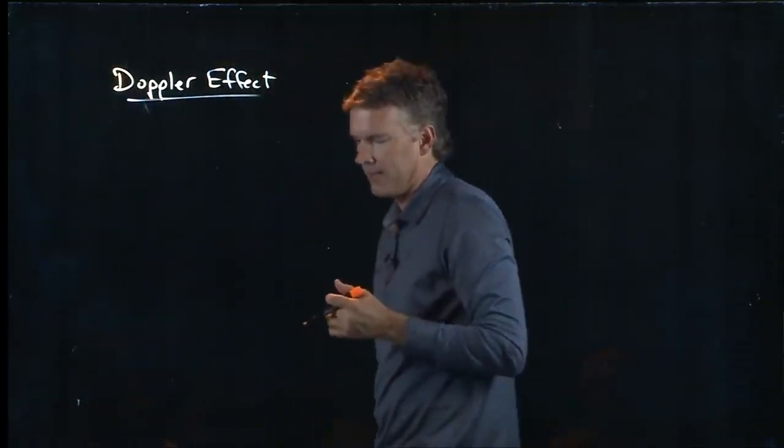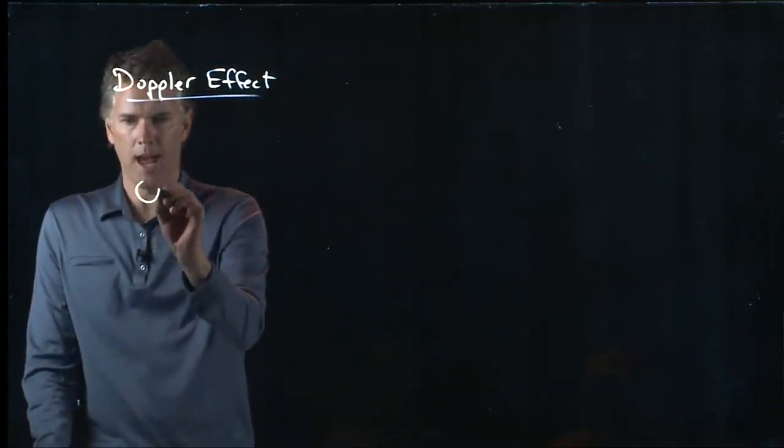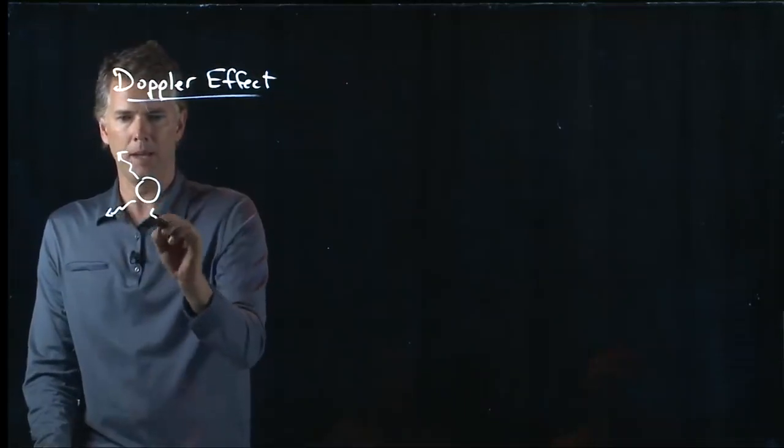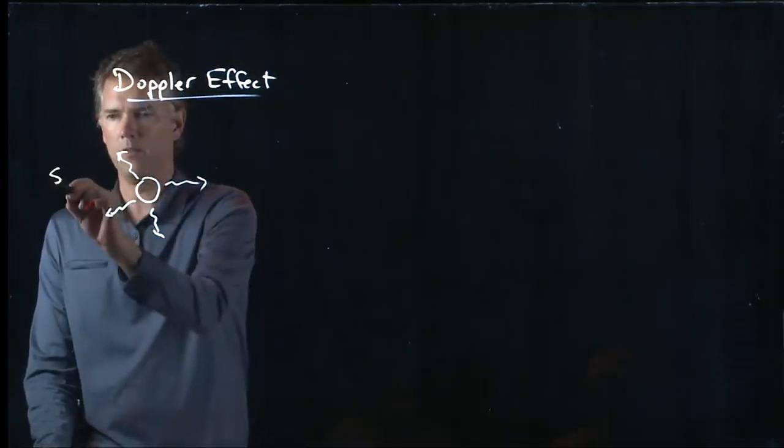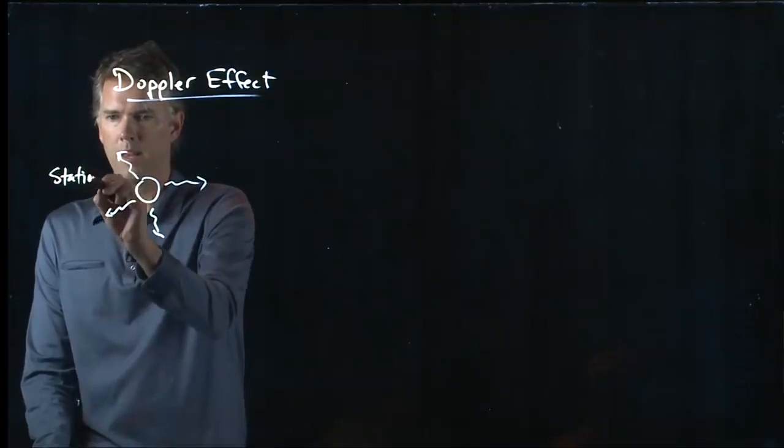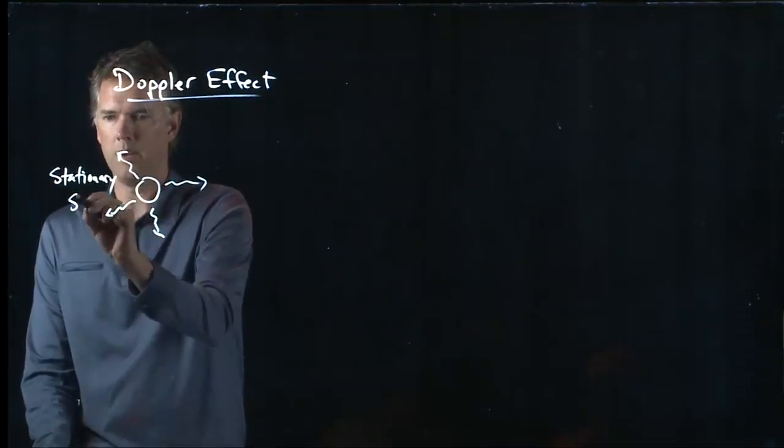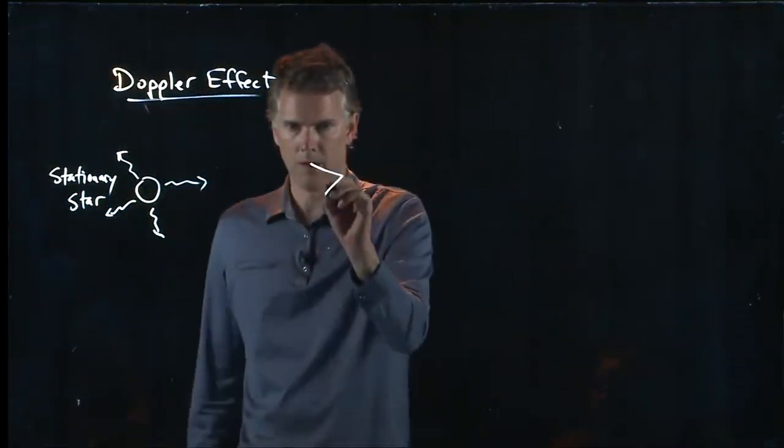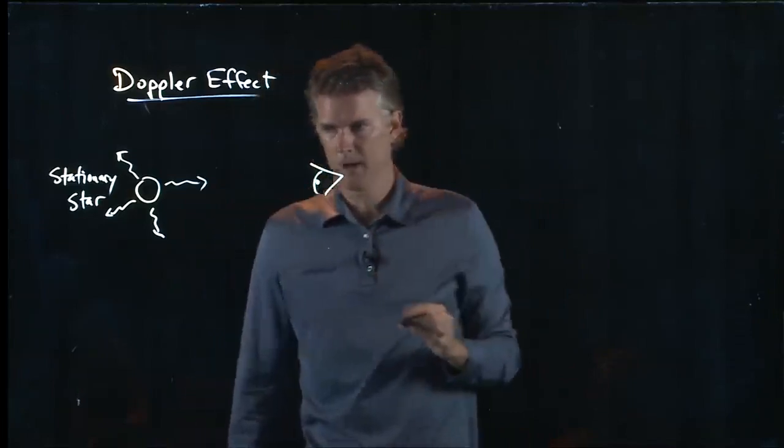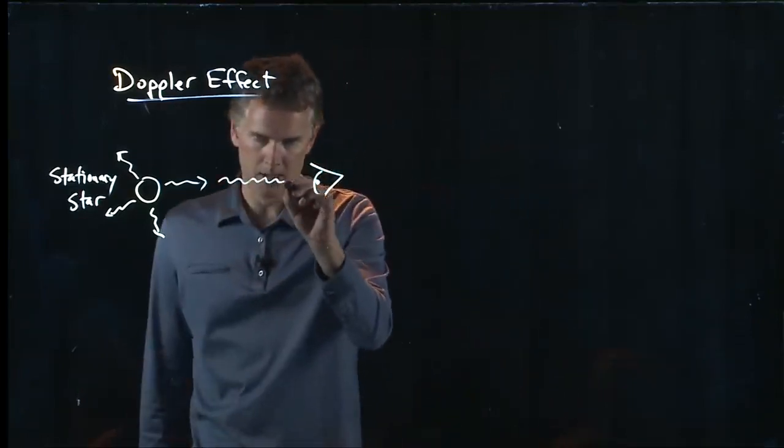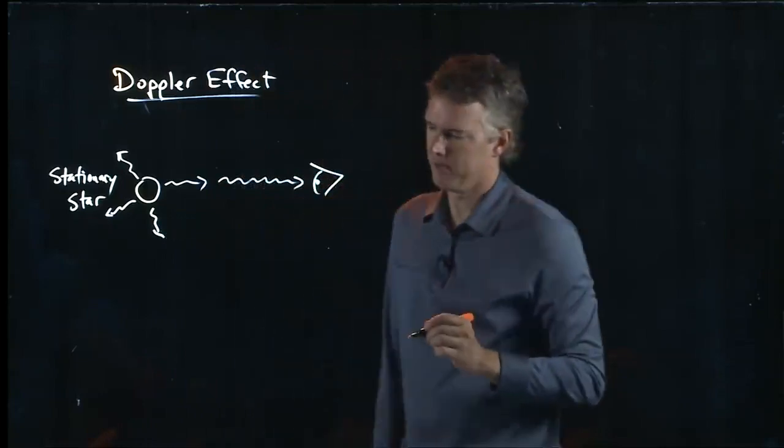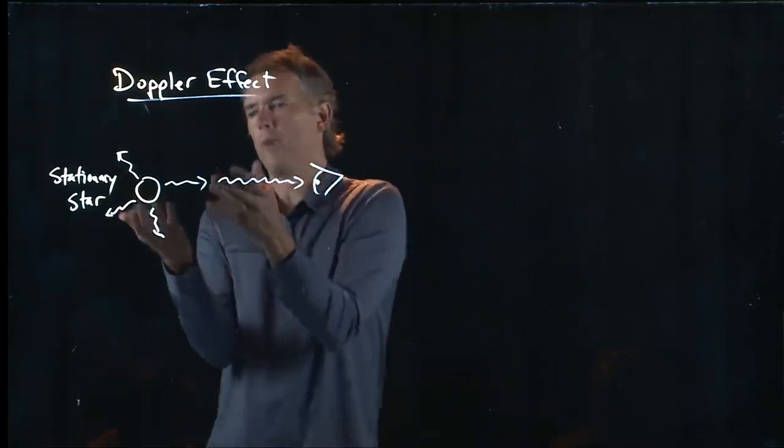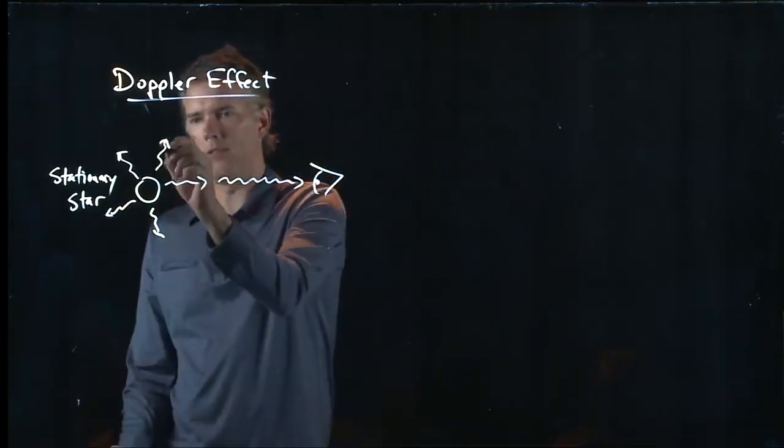And the Doppler effect is just this. Let's say I'm looking at a star, and I know that that star is spitting out light in all directions, and let's say that it is stationary relative to me. Here I am on the earth, I'm looking at the star with my eyeball, some of that light comes all the way and gets to me. What do I observe?